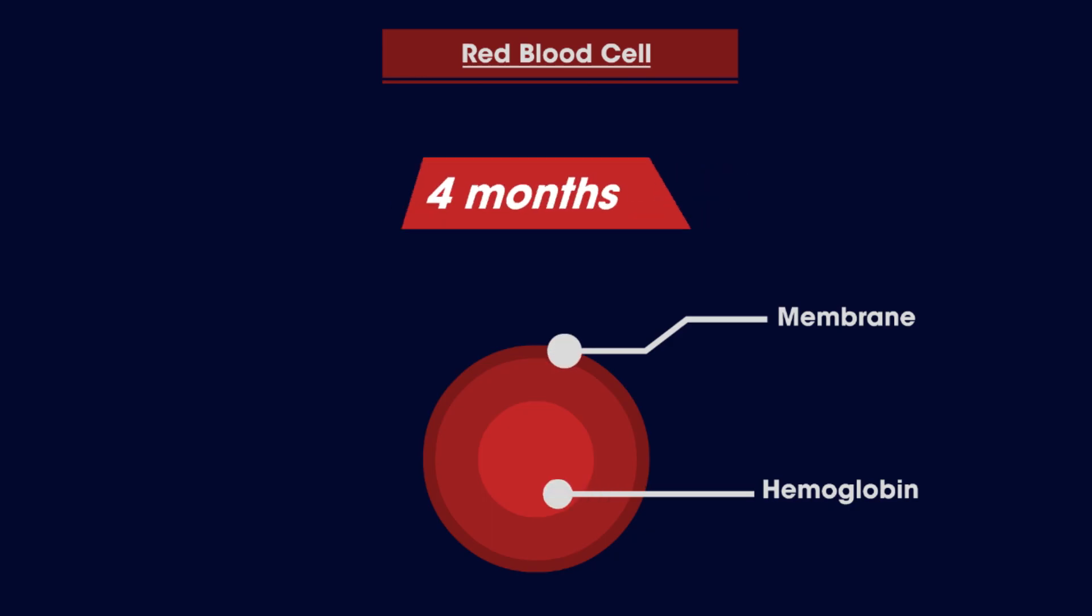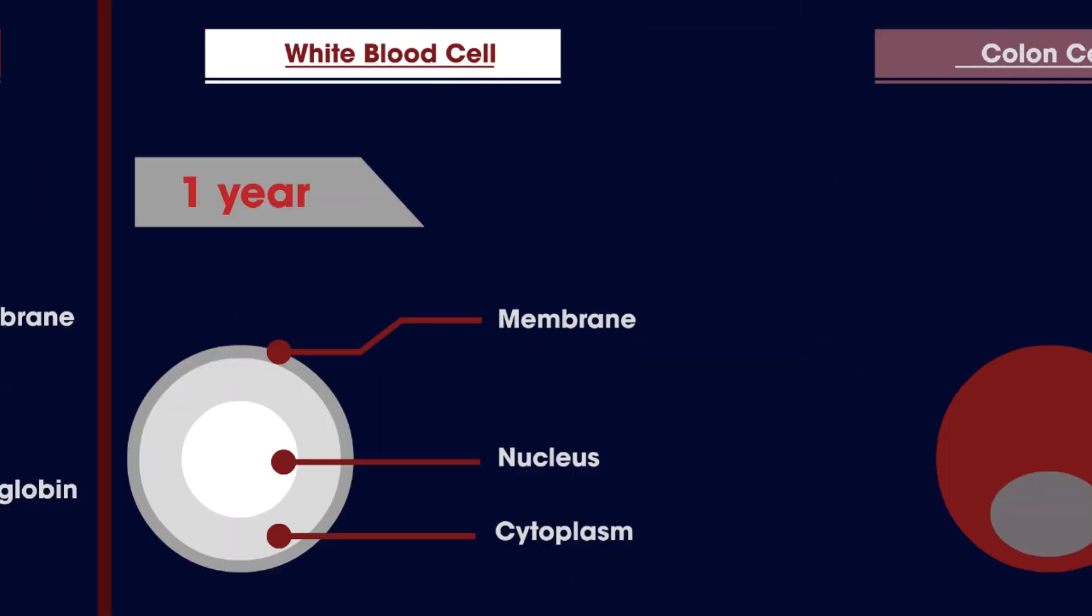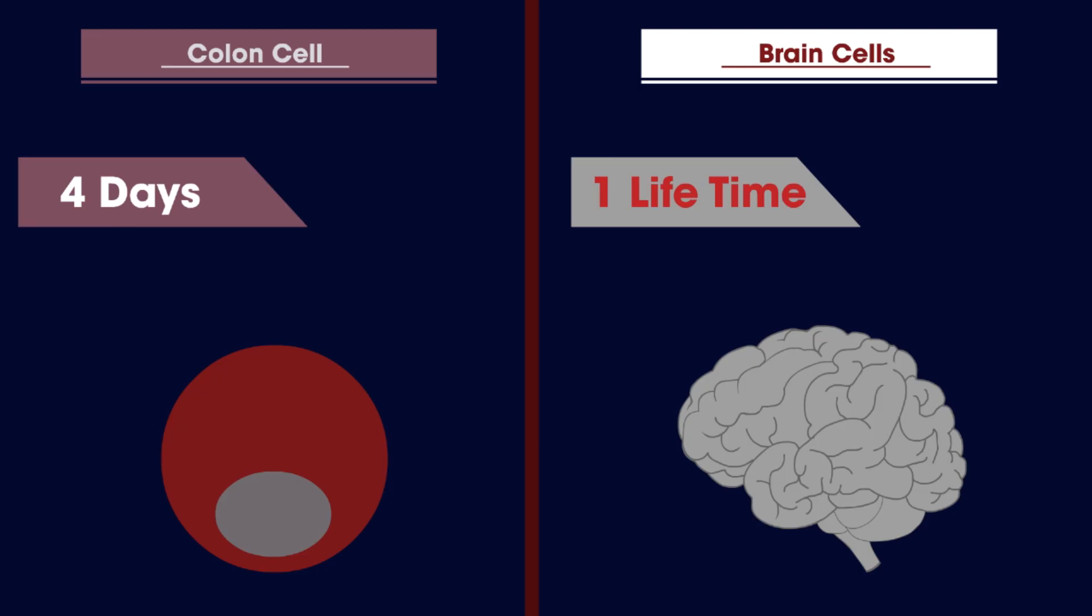Your red blood cells live about four months, white blood cells on average for over a year, whereas your colon cells have a lifespan of only about four days whilst your brain cells last for a lifetime.